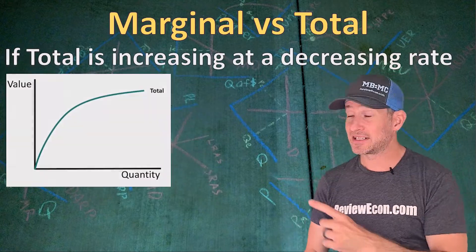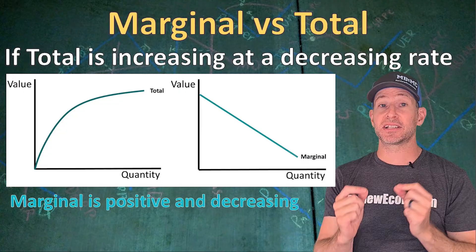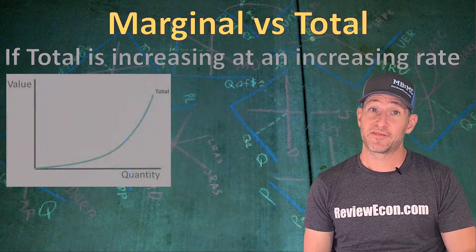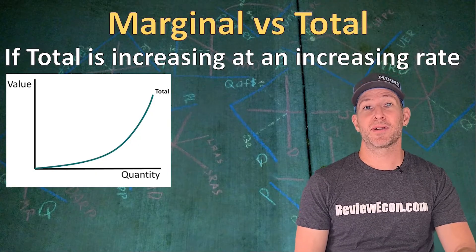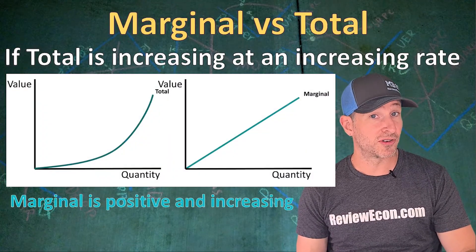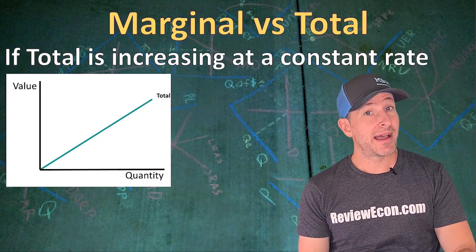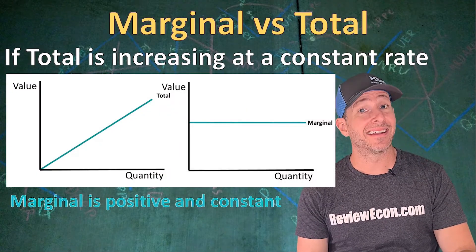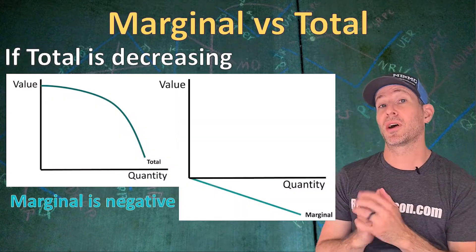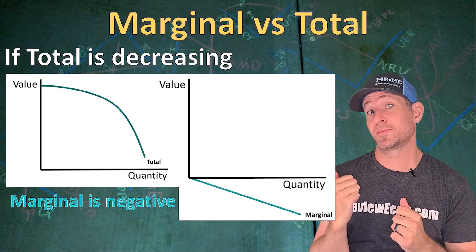If we graph it out and we see total increasing at a decreasing rate, that means marginal is going to be positive but decreasing. If we see total increasing at an increasing rate, that means marginal is positive and increasing. If we see total increasing at a constant rate, that means marginal is positive and constant. And if the total is decreasing, that means marginal is negative. You will see total and marginal graphs within this course often moving forward, and the relationship between the two should be apparent.